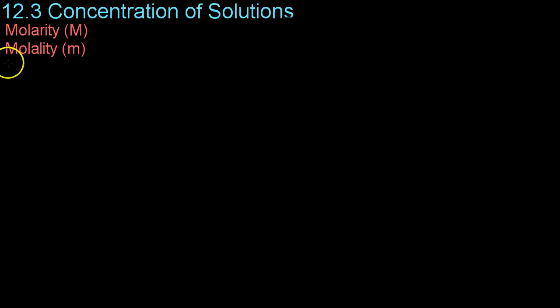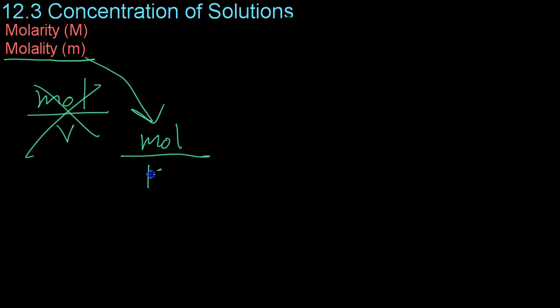Now, the second method we're going to be discussing for describing the concentration of a solution is what is known as its molality. And molality is very similar to molarity, with one key difference. It is, instead of moles per unit volume, molality is the number of moles per kilogram of solvent. So, for example, if we were to take one mole of sodium hydroxide, which is equal to 40 grams of sodium hydroxide...